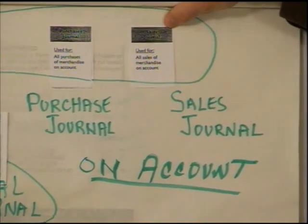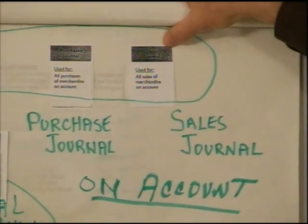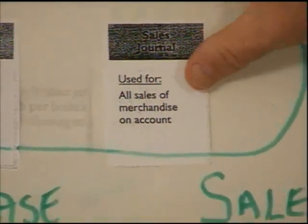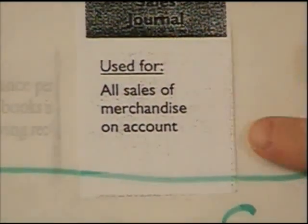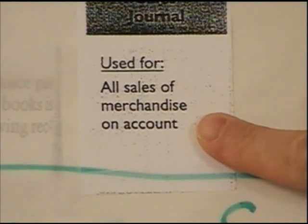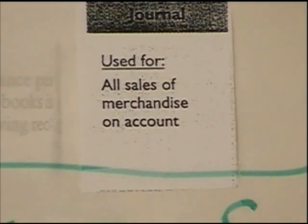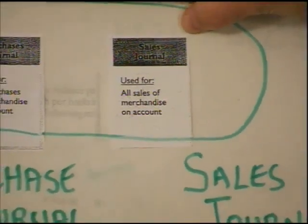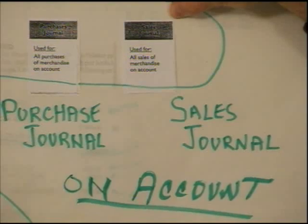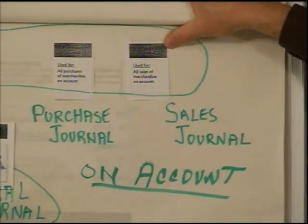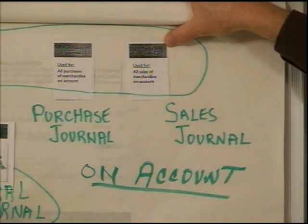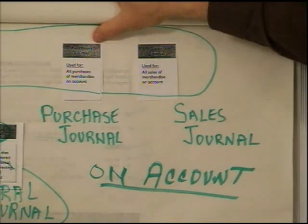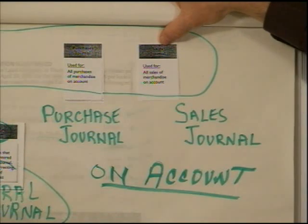The second non-cash journal is the Sales Journal. We're making sales, but notice it says: all sales of merchandise on account. We only use this journal if we're making a sale on account. If we're collecting money from a sale, money coming in is cash coming in, and that's a Cash Receipt. The only time we use the Sales Journal is when we make a sale on account, just as the Purchases Journal is only for purchases on account. Otherwise we're in the other two journals.